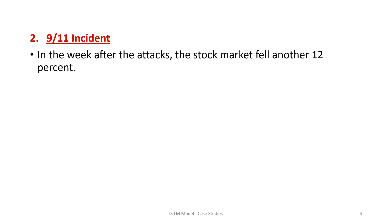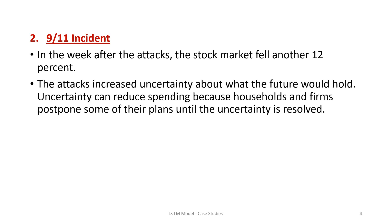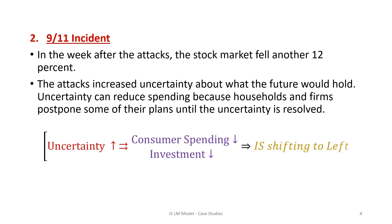The second shock was the terrorist attack on the Twin Towers on September 11, 2001. In the week after the attacks, the stock market fell another 12%, which was the biggest weekly loss since the Great Depression of the 1930s. Moreover, the attacks increased uncertainty about the future. This uncertainty reduced spending because households and firms postponed some of their plans until the uncertainty was resolved. These events also resulted in a leftward shift of the IS curve.